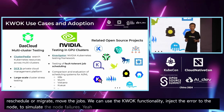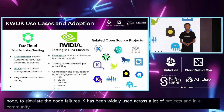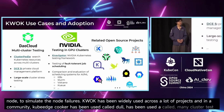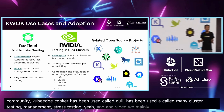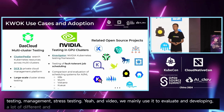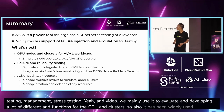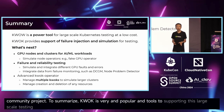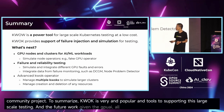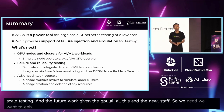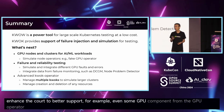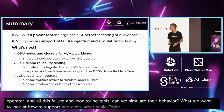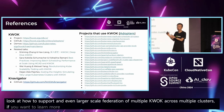Quark has been widely used across many projects and in the community. To summarize, Quark is a very popular tool to support large-scale testing. For future work, given GPU AI and new developments, we want to enhance Quark to better support GPU components from the GPU operator, training and monitoring tools — can we simulate their behavior? We also want to look at how to support even larger-scale federation of multiple Quark instances across multiple clusters. If you want to learn more, check out all the previous talks, references, and information.